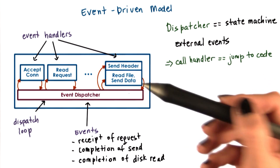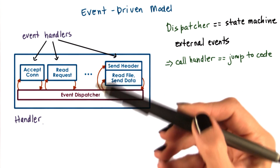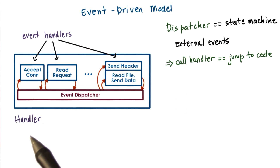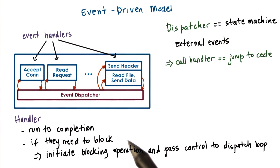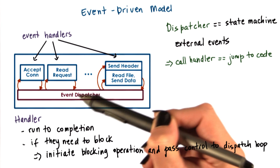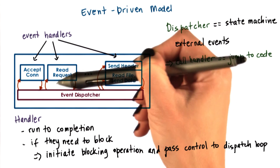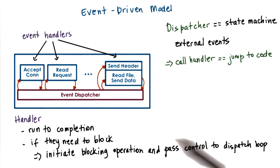If the file is not there, then some sort of error message will be sent to the client. Whenever an event occurs, the handlers are the sequence of code that executes in response. The key feature of the handlers is that they run to completion. If a handler needs to perform a blocking operation, it will initiate that operation and immediately pass control back to the event dispatcher. At that point, the dispatcher is free to service other events or call other handlers.